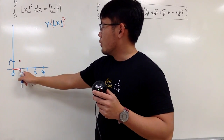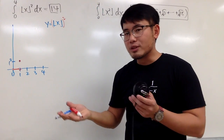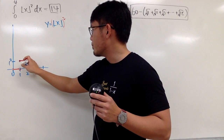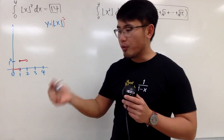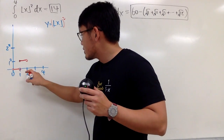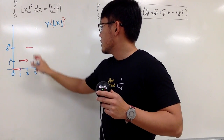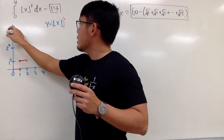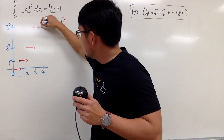Anything between 1 and 2, let's say 1.7, you put it into the floor function first. Floor of 1.7 is still 1. You square that, you still get 1 squared. And then you will have an open circle. But when x is 2, floor of 2 is 2, and you square that, you get 4 — that's 2 squared. So you jump to 4. Same thing, you will have this horizontal line. And then when x is 3, you jump to 9, which is 3 squared.